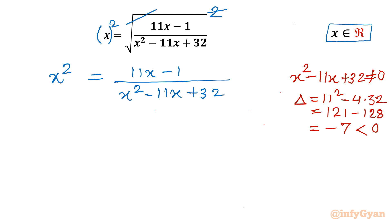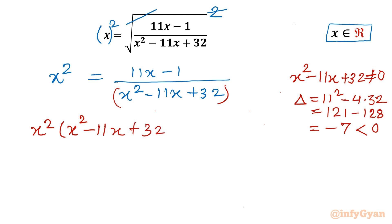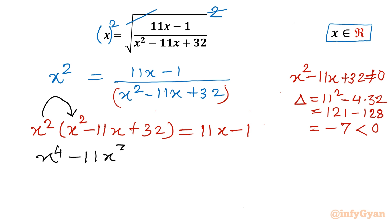So we can cross multiply this denominator. We get x squared times (x squared minus 11x plus 32) equals 11x minus 1. Taking the product: x to the power 4 minus 11x cubed plus 32x squared equals 11x minus 1.